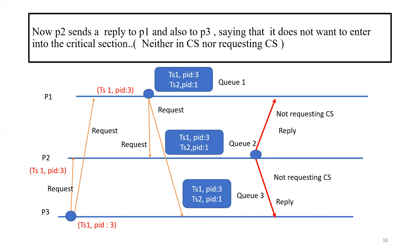Process P2 sends a reply to P1 and P3, indicating that it does not want to enter the critical section — it is neither in the critical section nor requesting it. It is not interested. So it sends a reply to processes P1 and P3: not requesting critical section.